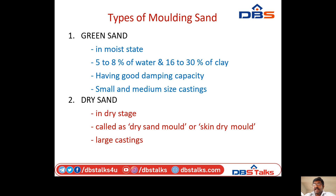Regarding dry sand: the mixture is prepared with proper binding material such as resins, then packed and baked in an oven. After the mould is made, it is kept in the dry stage to get the required bonding strength. This is also called dry sand mould or skin dry mould. It is used for large castings.